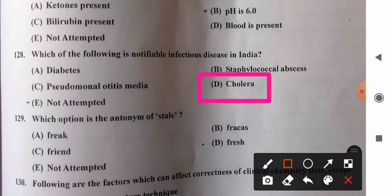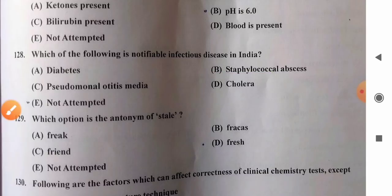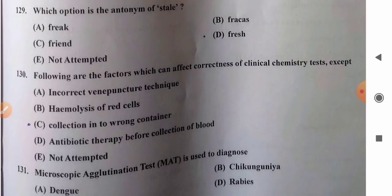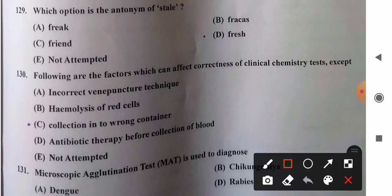Question 130: Factors which can affect correctness of clinical chemistry tests except — options: A) incorrect vein puncture technique, B) hemolysis of red cells, C) collection in wrong container, D) antibiotic therapy before collection. Antibiotic therapy before collection of blood cannot affect biochemical parameters. So option D is the correct answer.